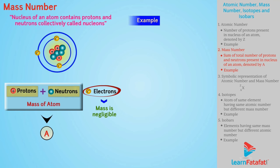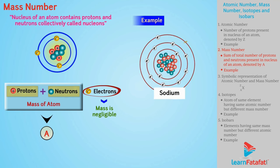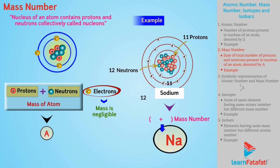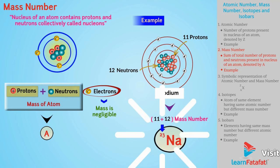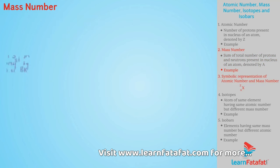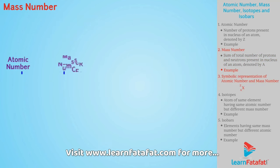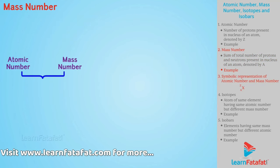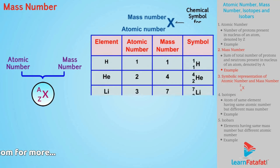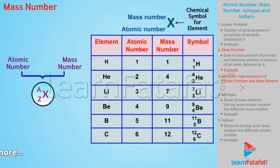For example, sodium has 11 protons and 12 neutrons. Hence, the mass number of sodium is 23. For an atom, the atomic number and mass number are denoted symbolically as X^A_Z. The following are a few elements with their mass numbers and symbols.